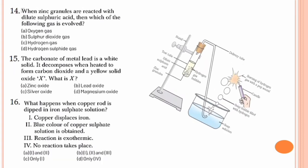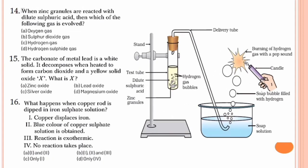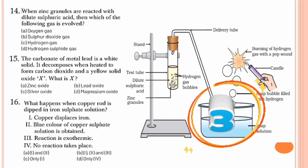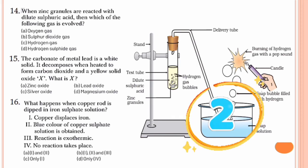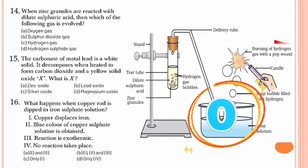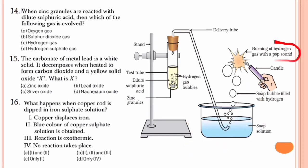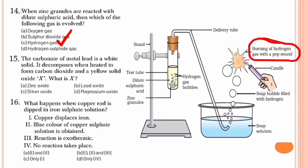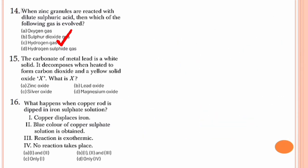Question number 14. When zinc granules are reacted with dilute sulphuric acid, which of the following gases is evolved? If you observe the figure, you can clearly understand that when a metal reacts with an acid, hydrogen gas is released. So the option is option C, hydrogen gas.